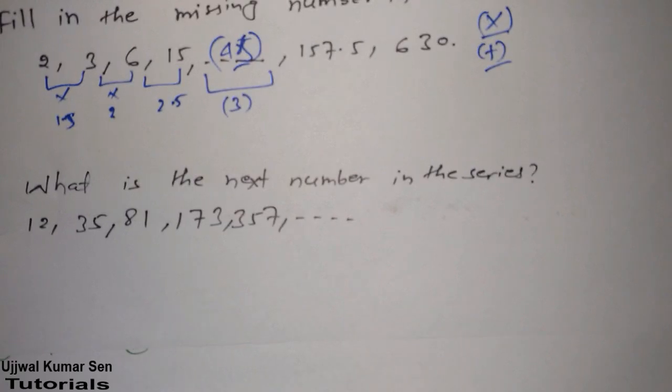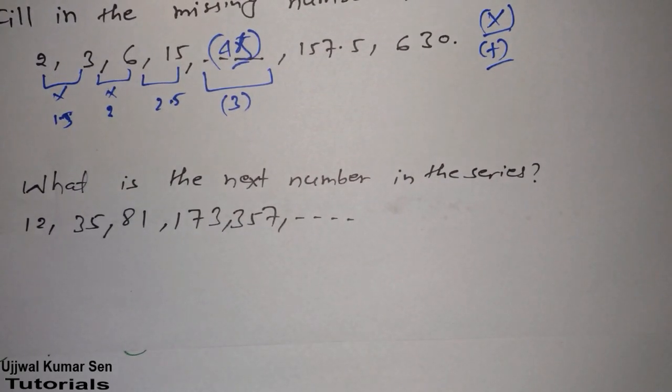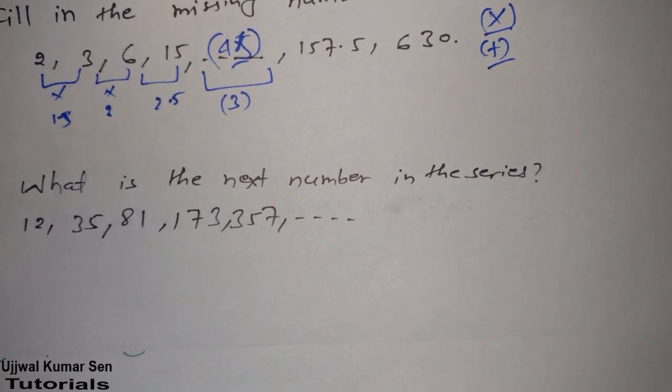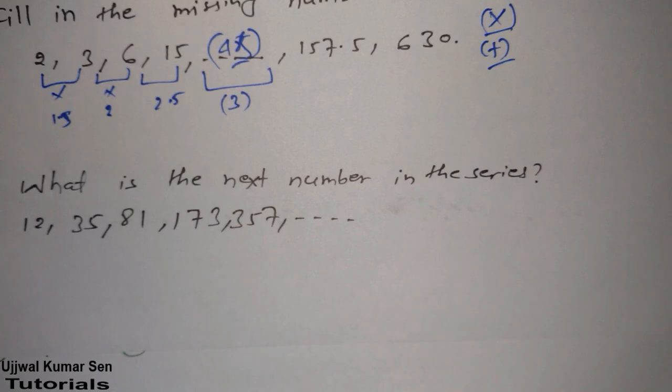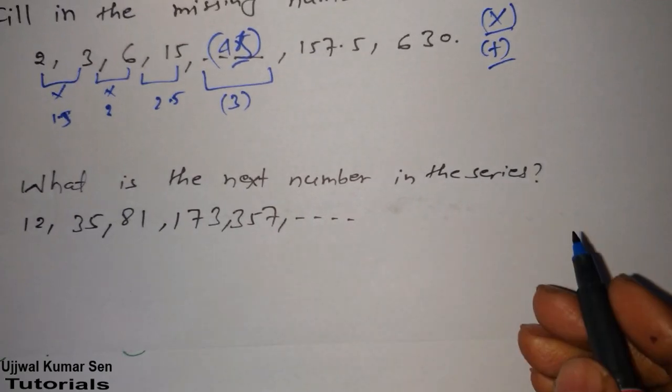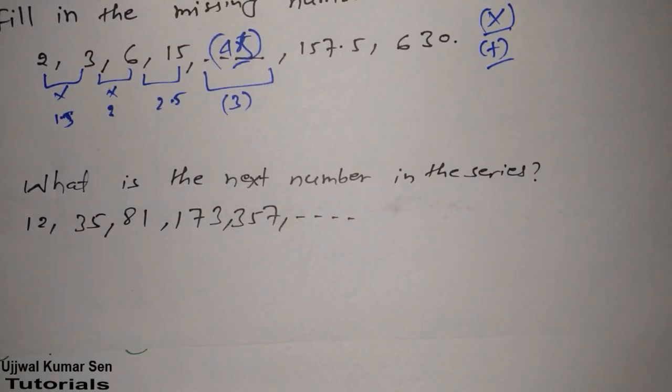Next question we have: what is the next number in the series? You will see direct relation 12, 35. Is there any direct relation multiplication? No, there is no direct relation. Is there anything else I can do? Always see—when you are unable to understand the thing, then you need to understand that this is a complex problem. They have mixed up two things.